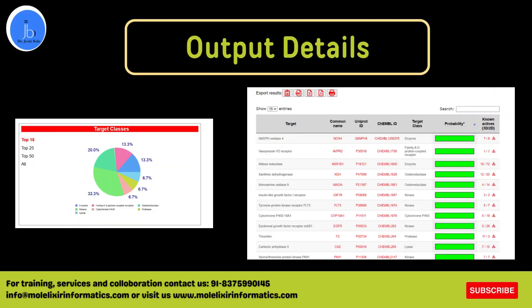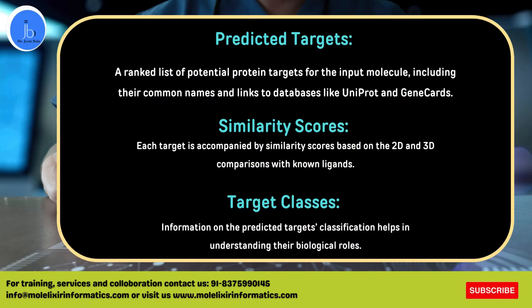Regarding the output, Swiss Target Prediction provides a ranked list of potential protein targets for the input molecule, including common names and links to databases like UniProt and GeneCard. Each target is also provided with a similarity score based on 2D and 3D comparison with known ligands, as well as target classes — information on the classification of predicted targets, which helps in understanding their biological role.